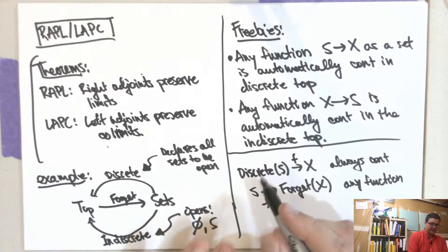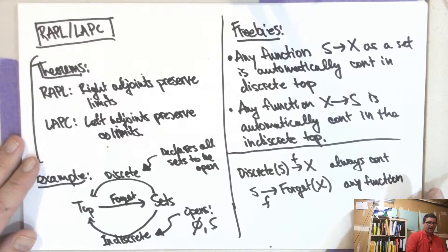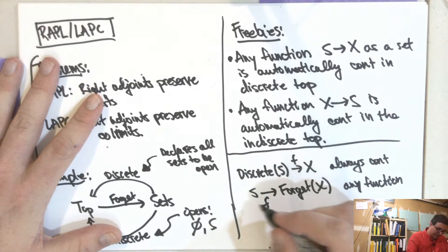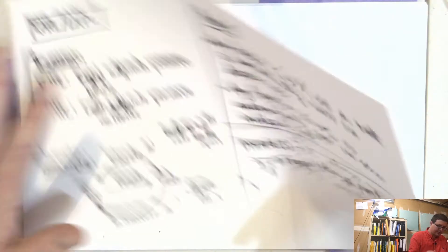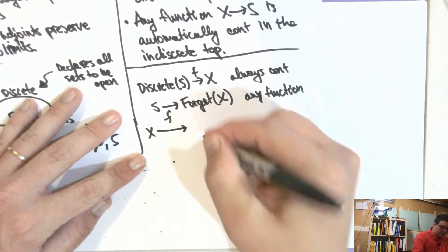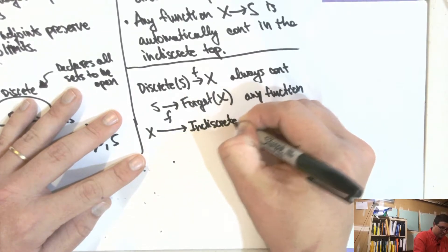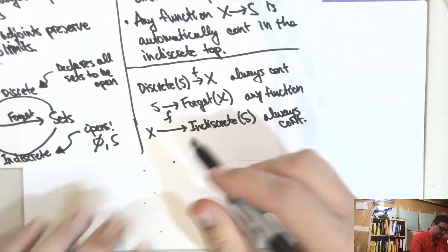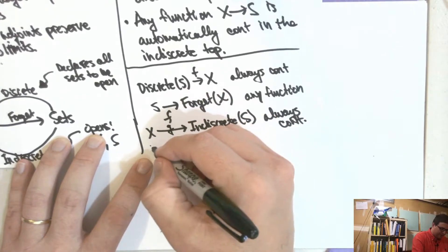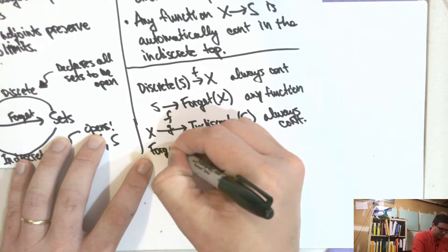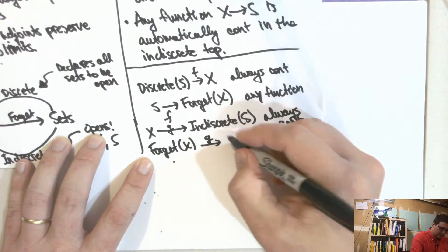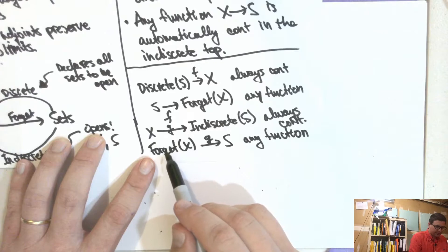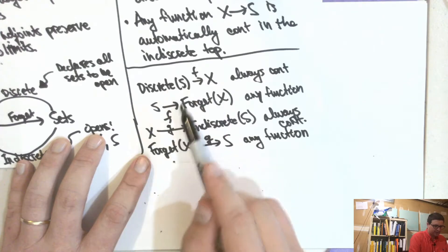We call this f, and this is f as well — it's the exact same thing but now it's a topological space. Similarly, for the indiscrete topology, the map X to indiscrete(S) is always continuous. So continuous maps in the indiscrete topology are the same as functions one way, and continuous maps in the discrete topology are just functions the other way.